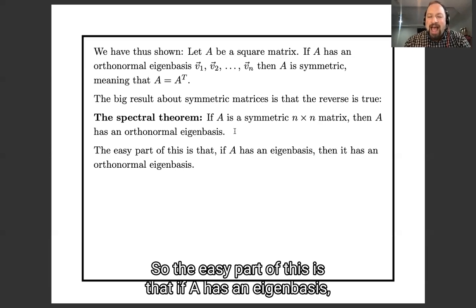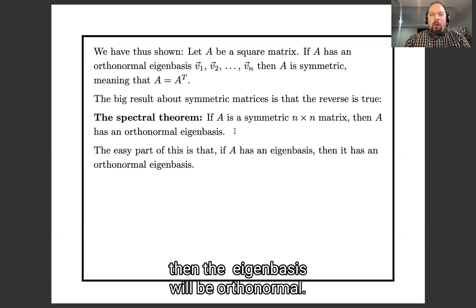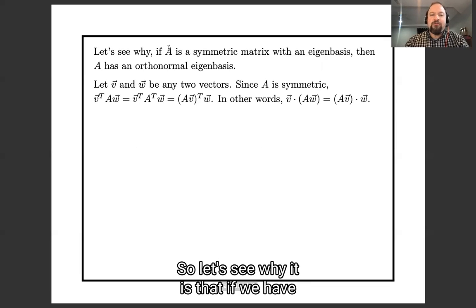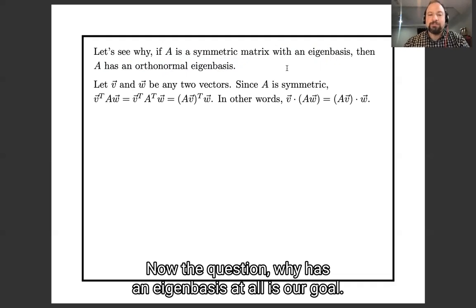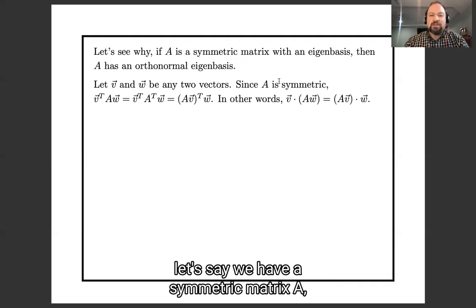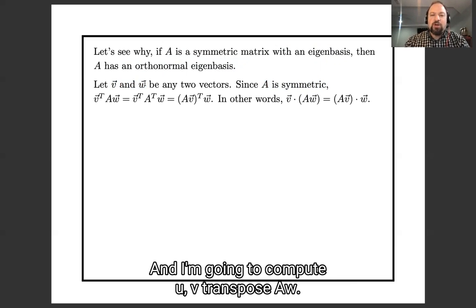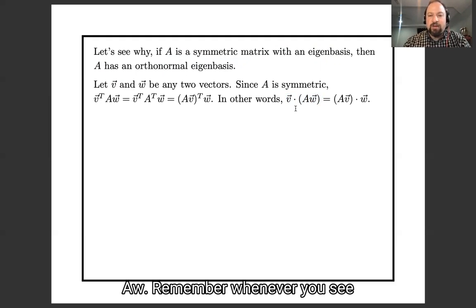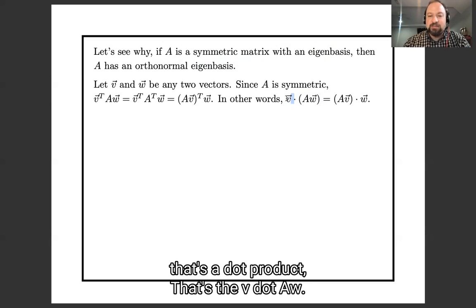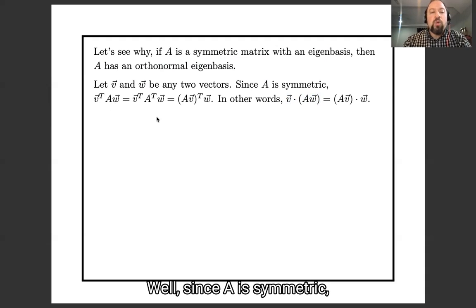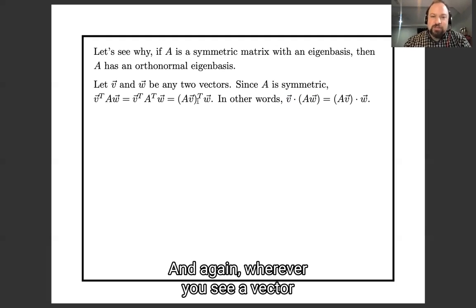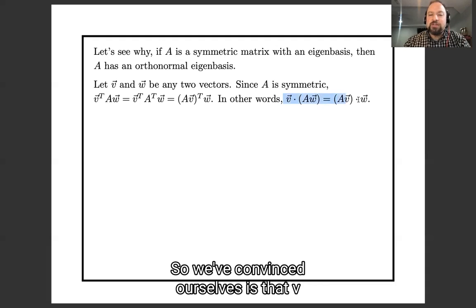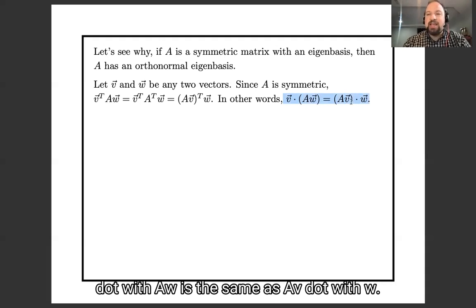The easy part is that if A has an eigenbasis and A is symmetric, then that eigenbasis will be orthonormal. Let's say we have a symmetric matrix A and two vectors V and W, and I'm going to compute V transpose AW — the dot product of V with AW. Since A is symmetric, I can replace A with A transpose, and V transpose A transpose is (AV) transpose. So V dotted with AW is the same as AV dotted with W.